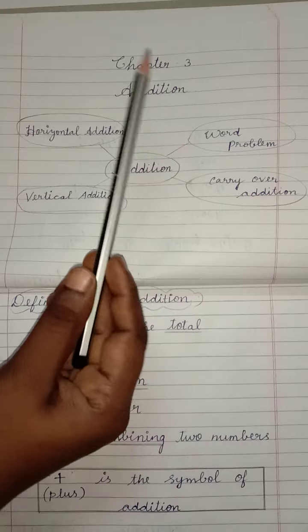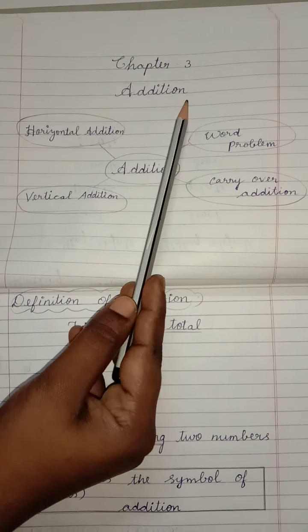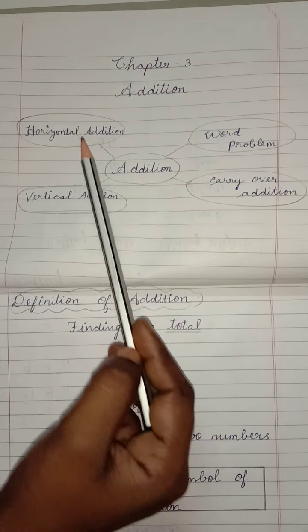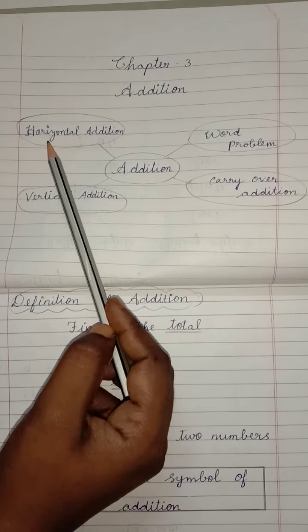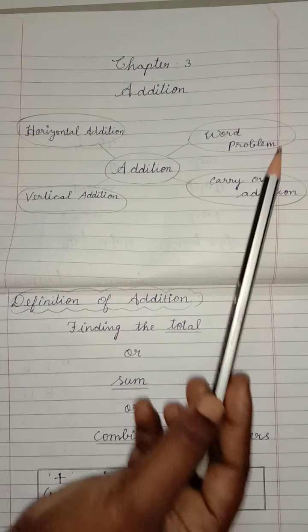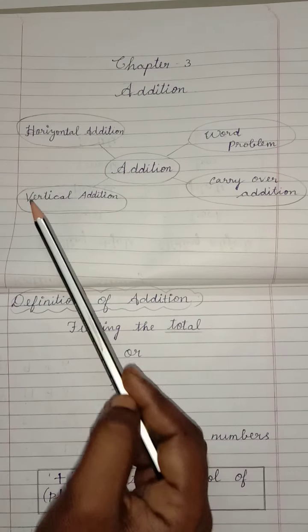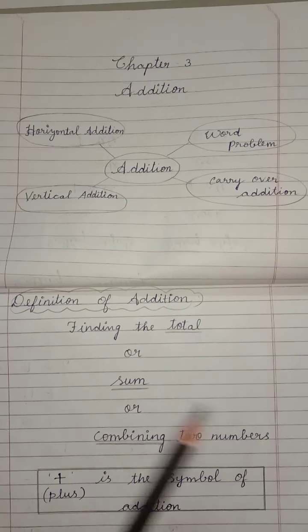Today we are going to write Chapter 3: Addition. Under Addition we have 4 topics: Horizontal Addition, Word Problem, Carryover Addition, and Vertical Addition.